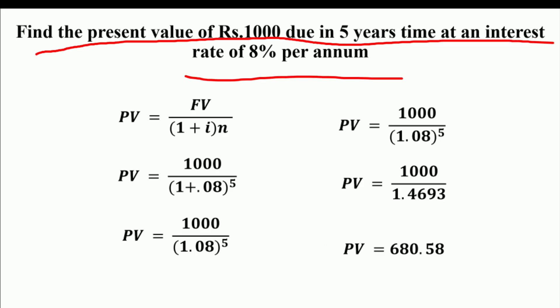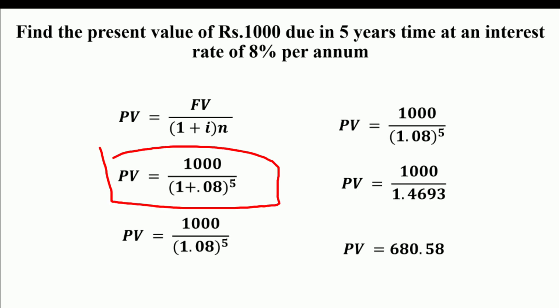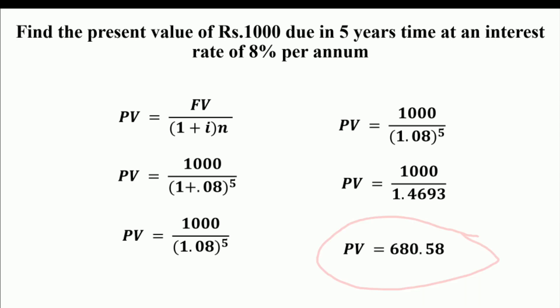We have an example: find the present value of ₹1000 which is due in 5 years at the rate of interest 8% per annum. Using PV = FV ÷ (1 + i)^N, we substitute: ₹1000 ÷ (1 + 0.08)^5 = 1000 ÷ 1.08^5 = 1000 ÷ 1.4693. Therefore, the present value is ₹680.58. So the present value of ₹1000 at 8% over 5 years is ₹680.58.